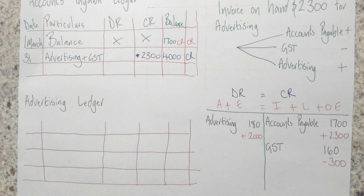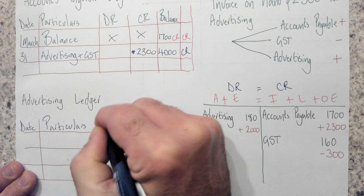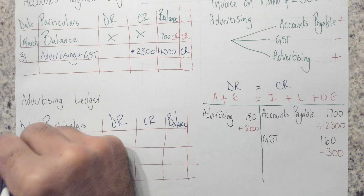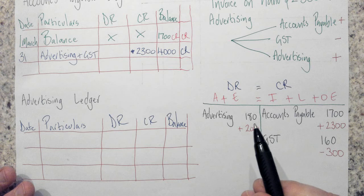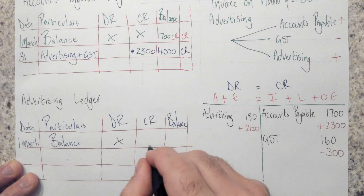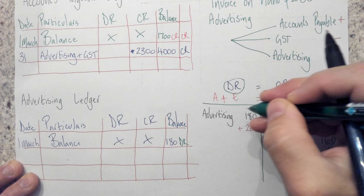For the advertising ledger, we'll do the same thing. We'll set up the columns: date, particulars, debit, credit, balance — this time without the extra column. First, I need to work out if there was an existing amount. Yes, there was — that $180 there. So I'll put the date as the 1st of March and enter the opening balance. I'll skip those columns and enter $180. Of course, that is a debit — it's a debit because it's on the debit side of the trial balance.